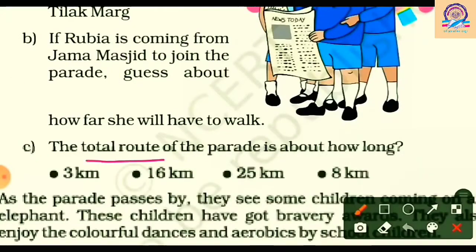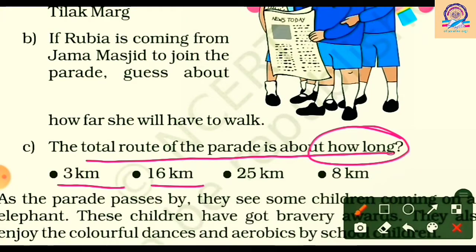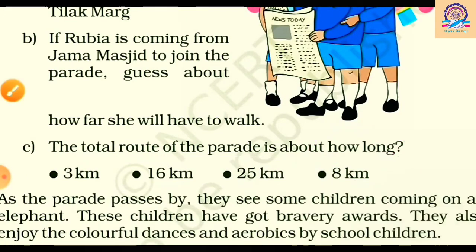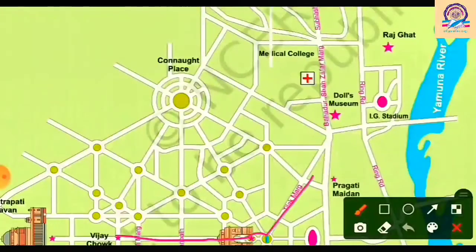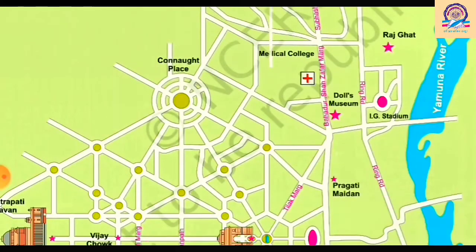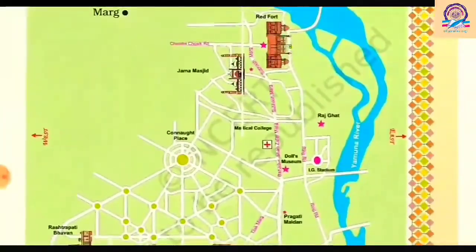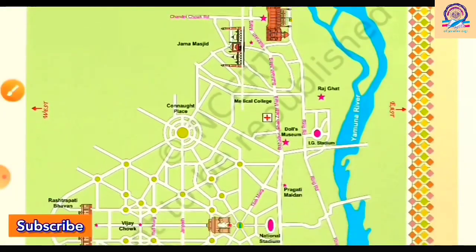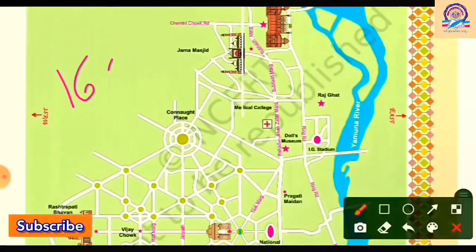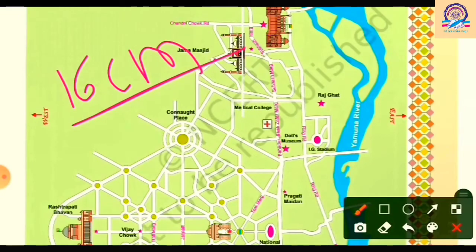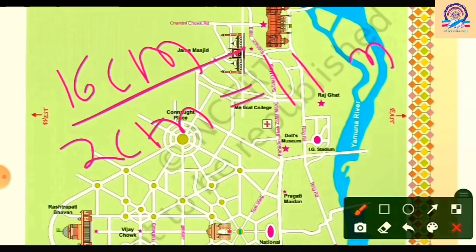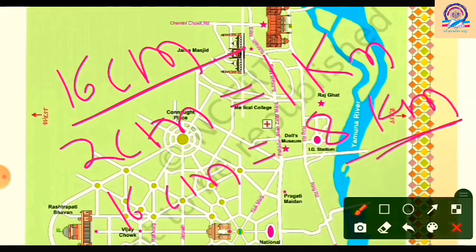The next question is: the total route of the parade is about how long? We measure the entire parade route on the map using a scale — from Vijay Chowk through Tilak Marg, B.S. Jafar Marg, Subhas Marg, and ending at Red Fort. The total measured distance is around 16 cm. Since 2 cm equals 1 km, 16 cm equals 8 km.